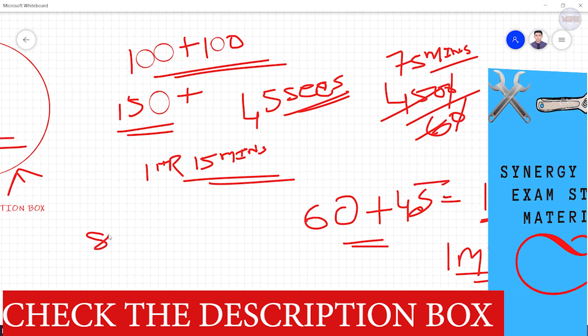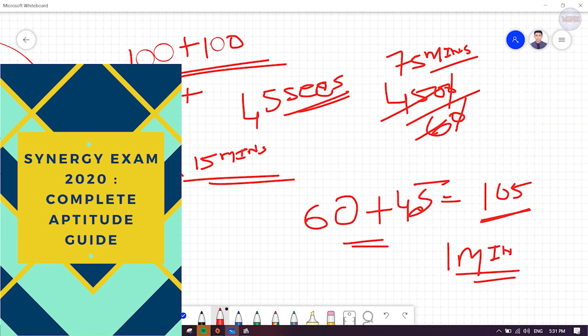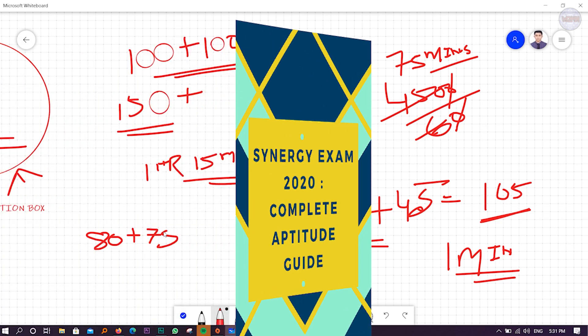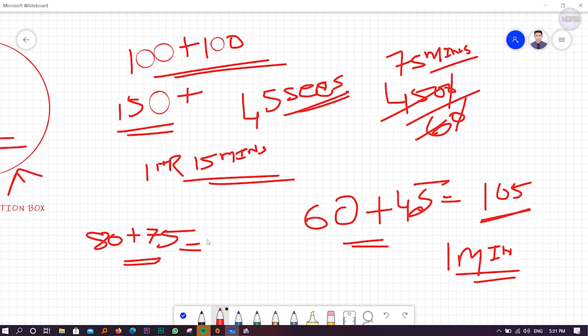So try to score in your knowledge part at least 80, and in your aptitude part at least 75. So 155 you must get to clear the cutoff in Synergy. The syllabus discussion has been done, time management told, and cutoff also told. If you like this, don't forget to give me a thumbs up and please subscribe my channel.